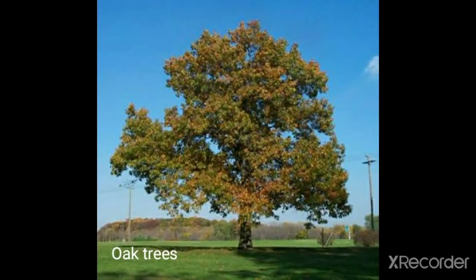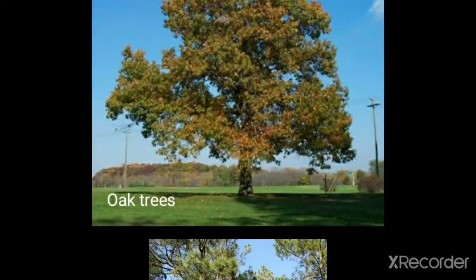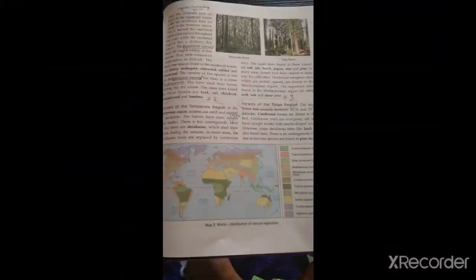We have now studied three things: forest of tropical region, forest of temperate region, and now we are reading the third part — forest of the taiga region. The taiga forest belt extends between 50 degrees north and 70 degrees north latitudes. Coniferous forests are found in this belt.